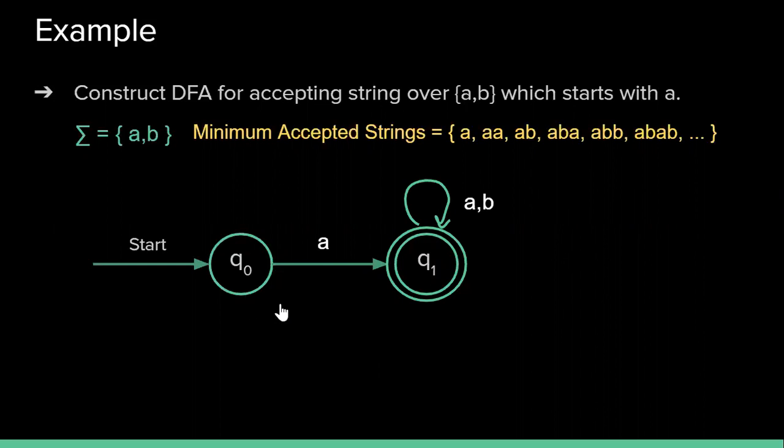So if I try to read a symbol b from q0, we will reach to the state q2. And from this q2 if I will read anything or any number of a's and b's, it will be treated as my invalid string. So I can mark here self loop of a,b and my q2 will be treated as my error state, dead state, or trap state. So now this DFA is here complete.